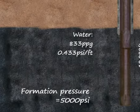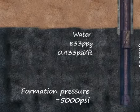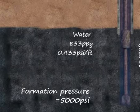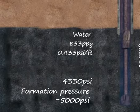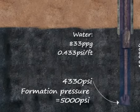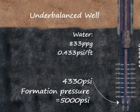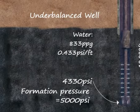If the same well was filled with water, which weighs 8.33 pounds per gallon, or 0.433 psi per foot, having multiplied 8.33 by 0.052, the pressure exerted at the bottom of the well would only be 4,330 psi. If the formation pressure is 5,000 psi, the well is underbalanced by 670 psi, and formation fluids may enter the well, as the formation pressure is greater than the wellbore pressure.